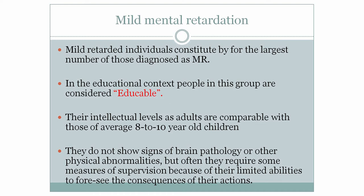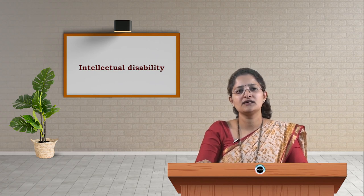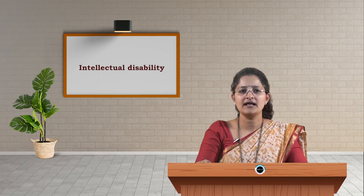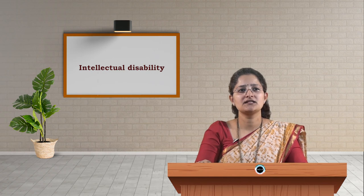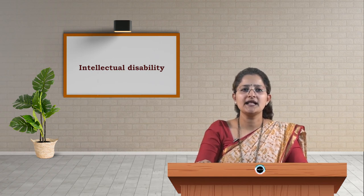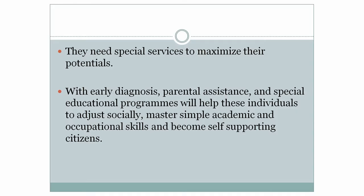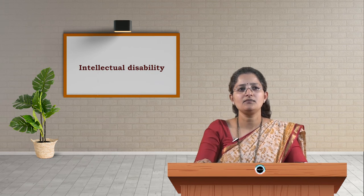Mild mental retardation constitutes the large number of those diagnosed. In an educational context, people in this group are considered educable; their intellectual level as adults is comparable with those of average 8 to 10 year old children. They do not show signs of brain pathology or other physical abnormality, but often require some measures of supervision due to their limited ability to foresee the consequences of their actions. With early diagnosis, parental assistance, and special education programs, they can adjust socially, master simple academic and occupational skills, and become self-supported citizens.